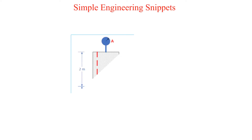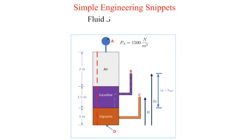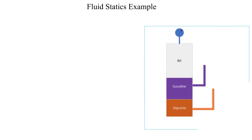Welcome to another Simple Engineering Snippet. In this instructional video we work a fluid mechanics example involving fluid statics. A container contains three fluids each with a distinctly different density. The top layer is pressurized air, the middle layer is gasoline, the bottom layer is glycerin.